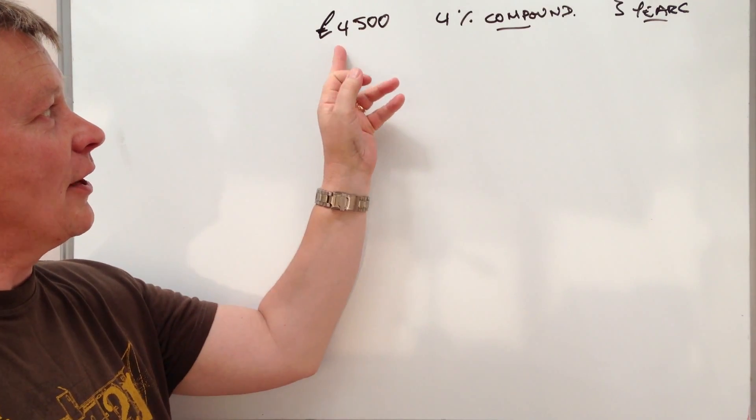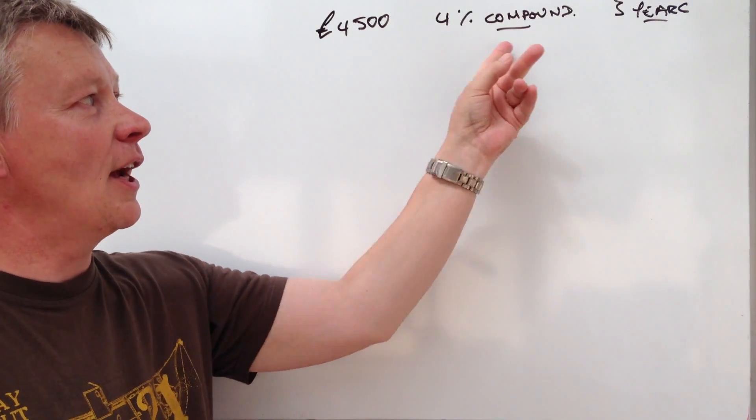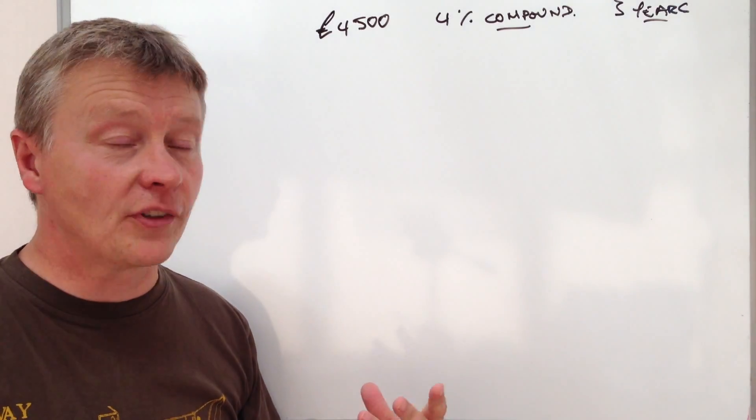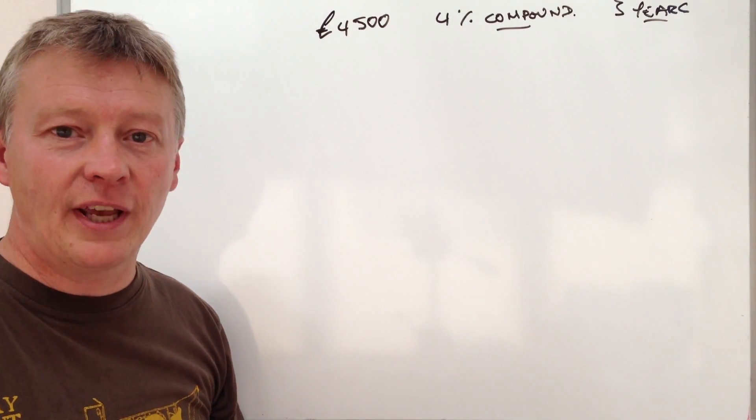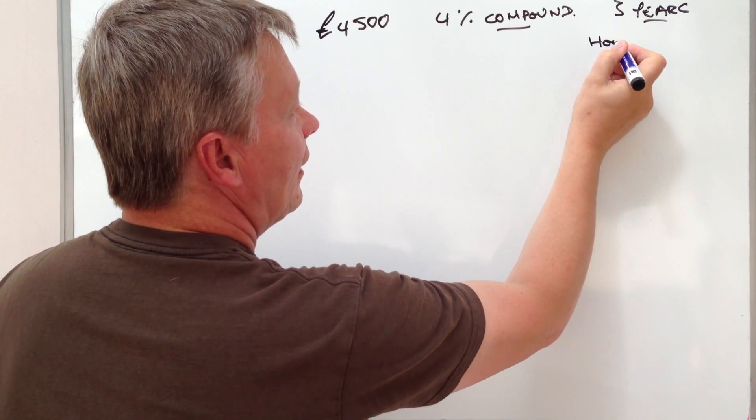So the question itself is £4,500 and it's going to be put into a bank account for 4% compound over a three year period and the question is at the end of the three years how much?